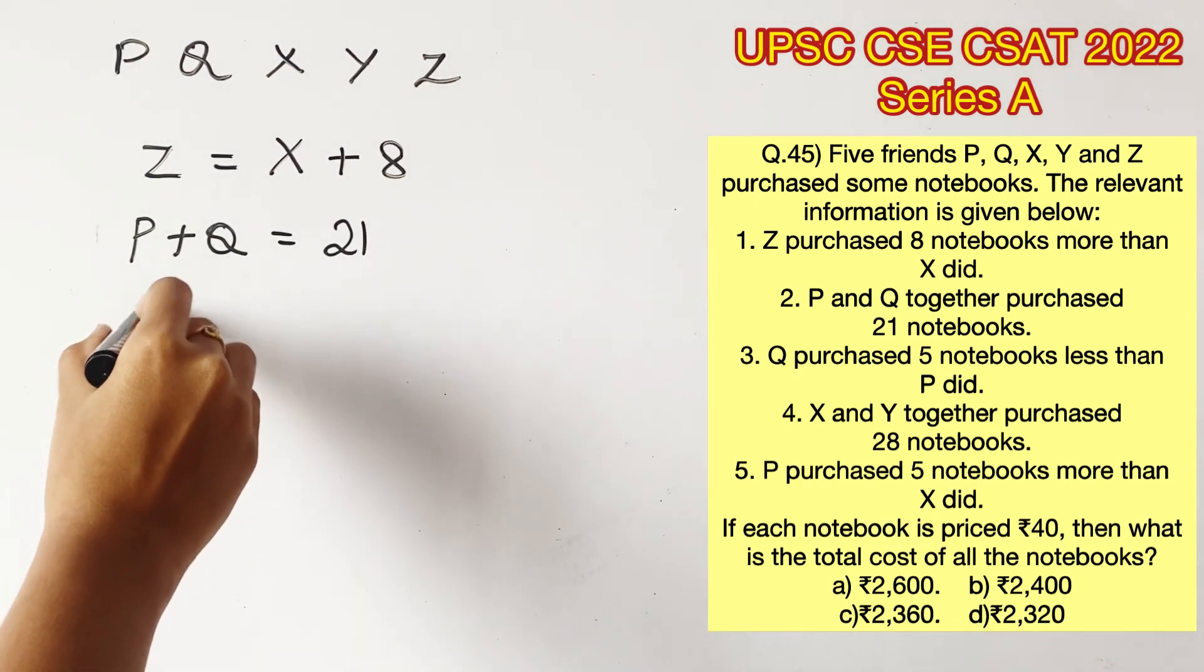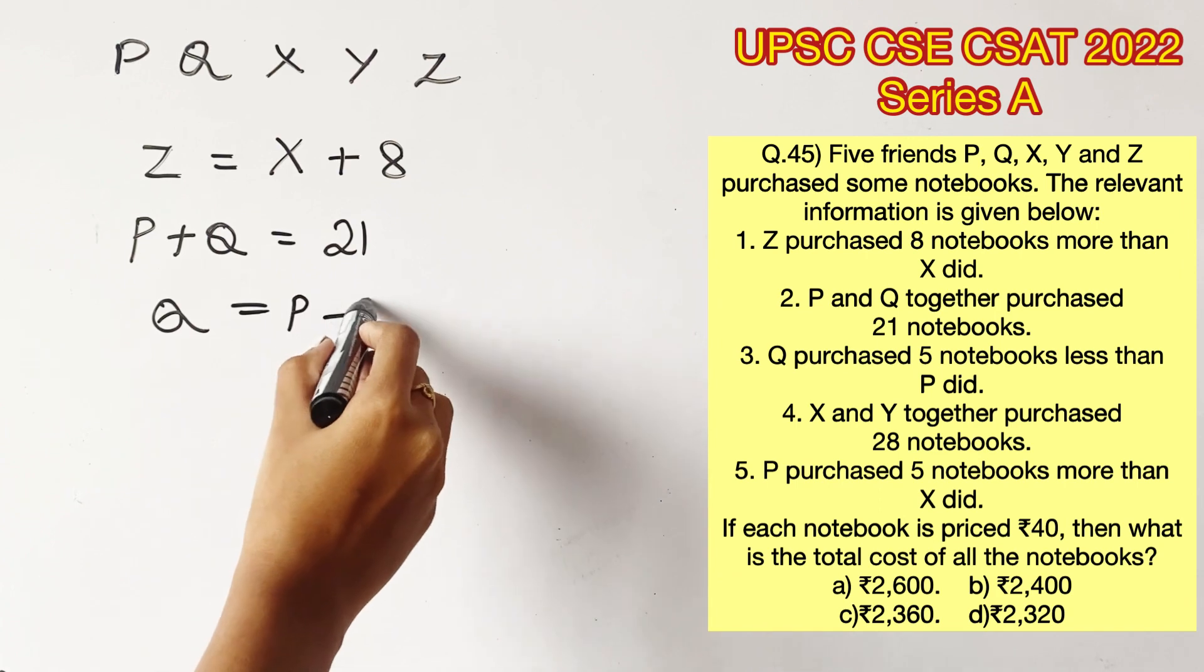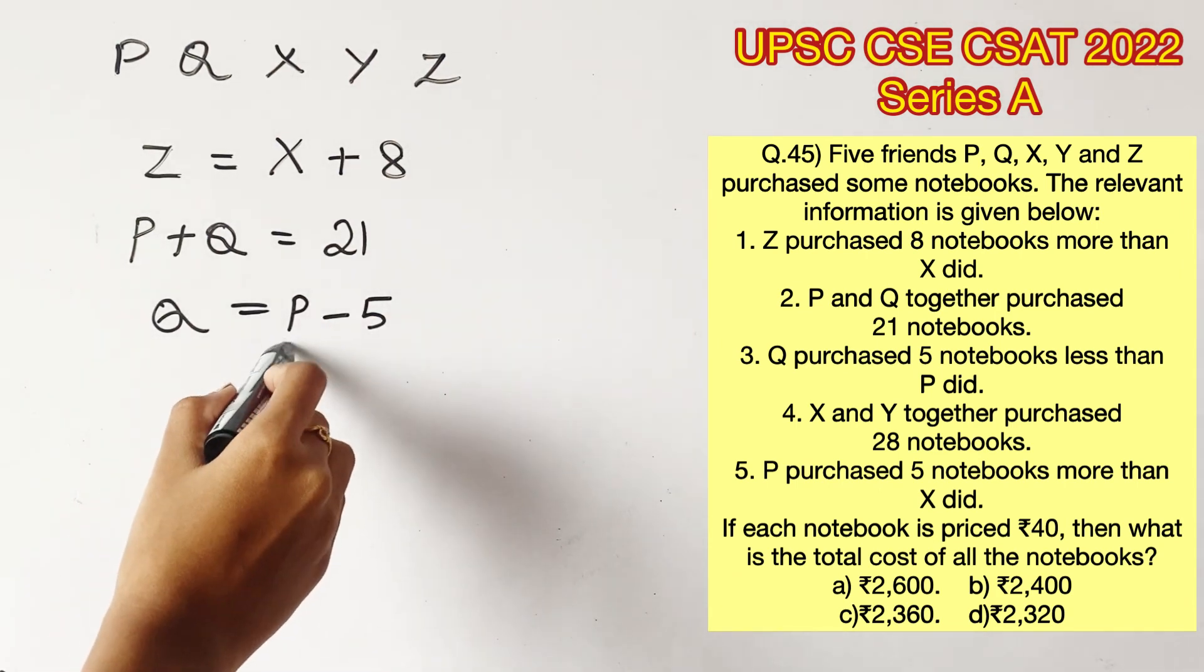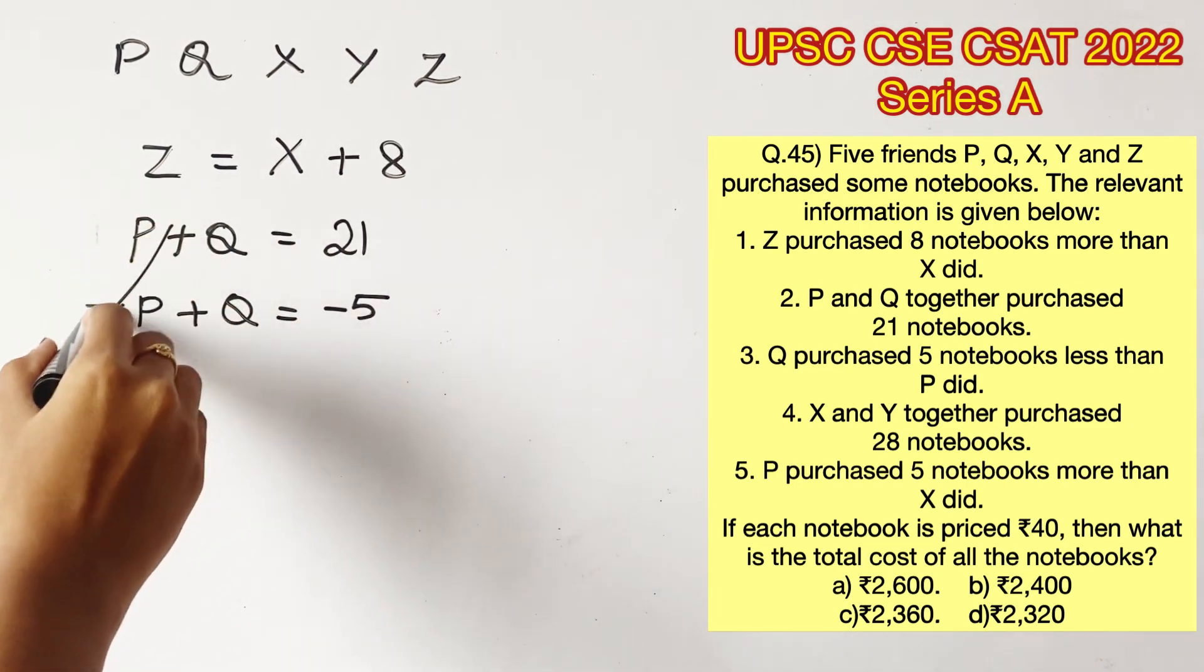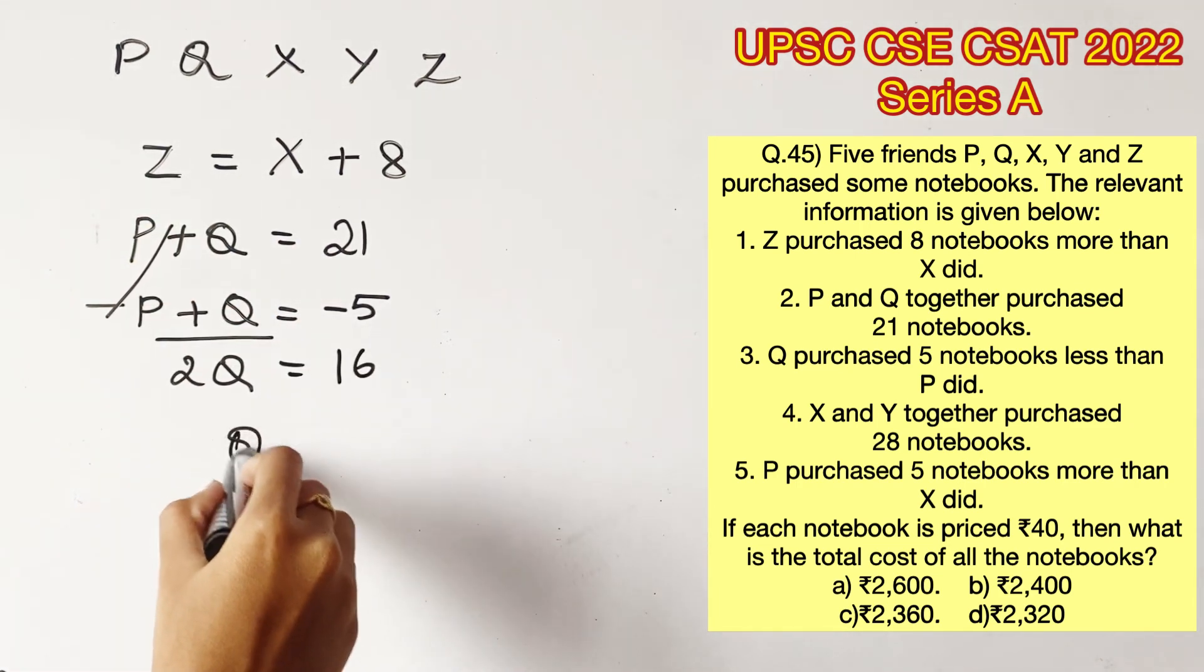The next statement says Q purchased 5 notebooks less than P, which means Q is equal to P minus 5. Let's bring P to the other side so that we can solve for both Q and P. This gives us 2Q is equal to 16, Q is equal to 8.